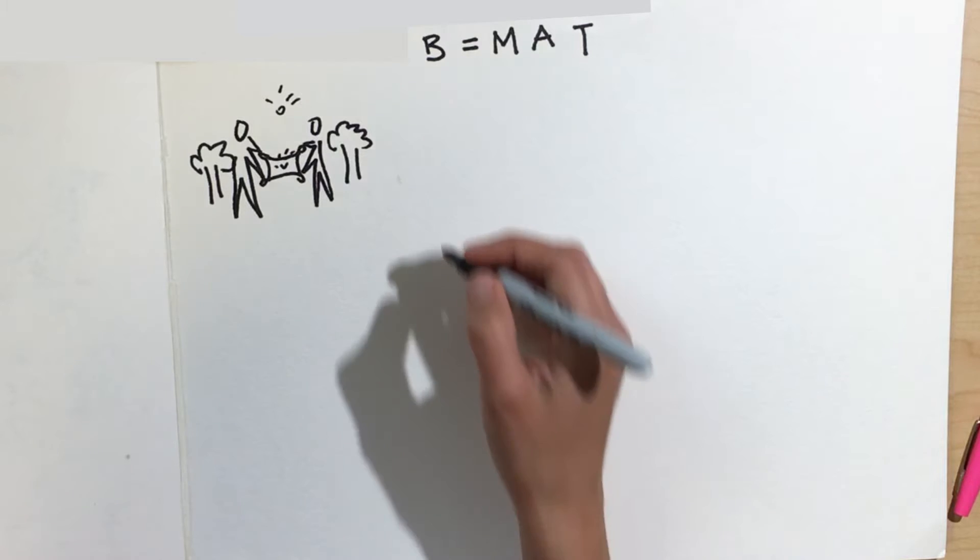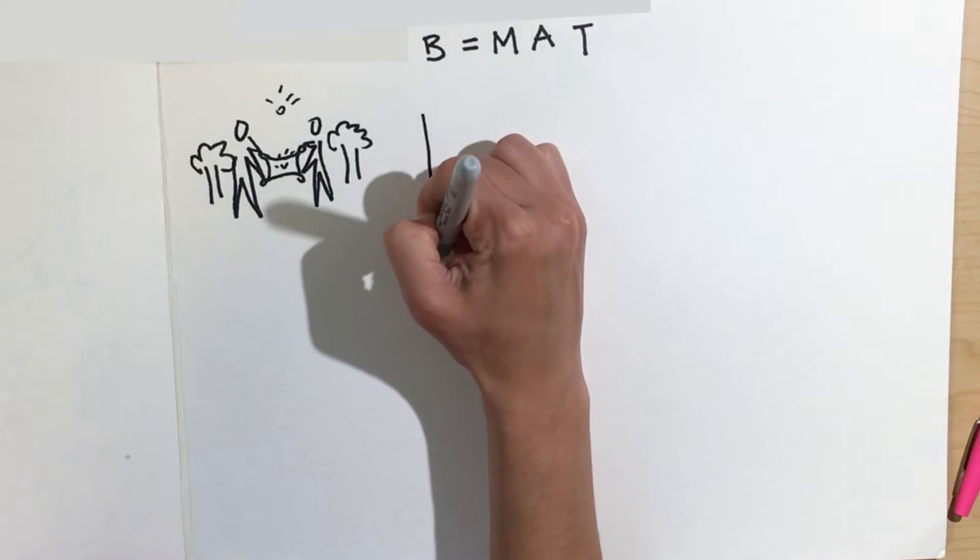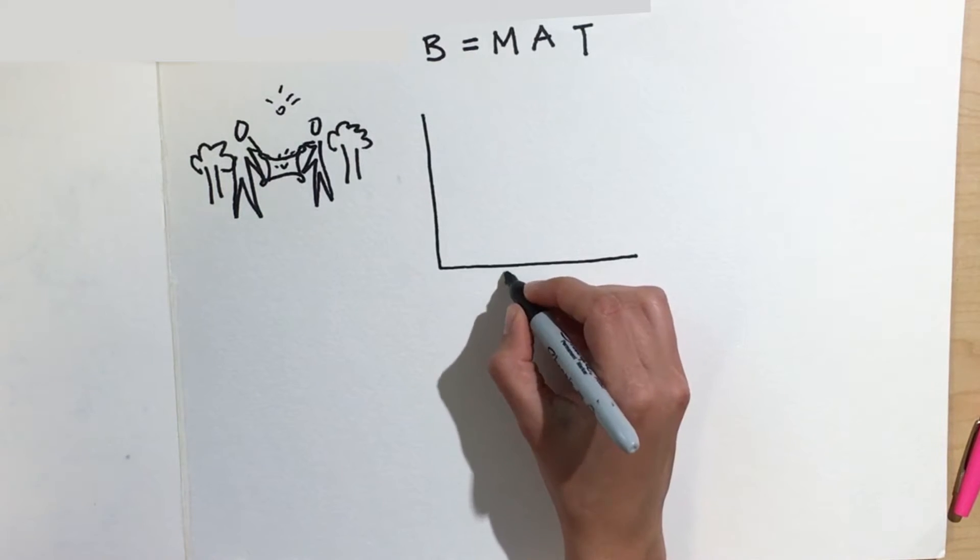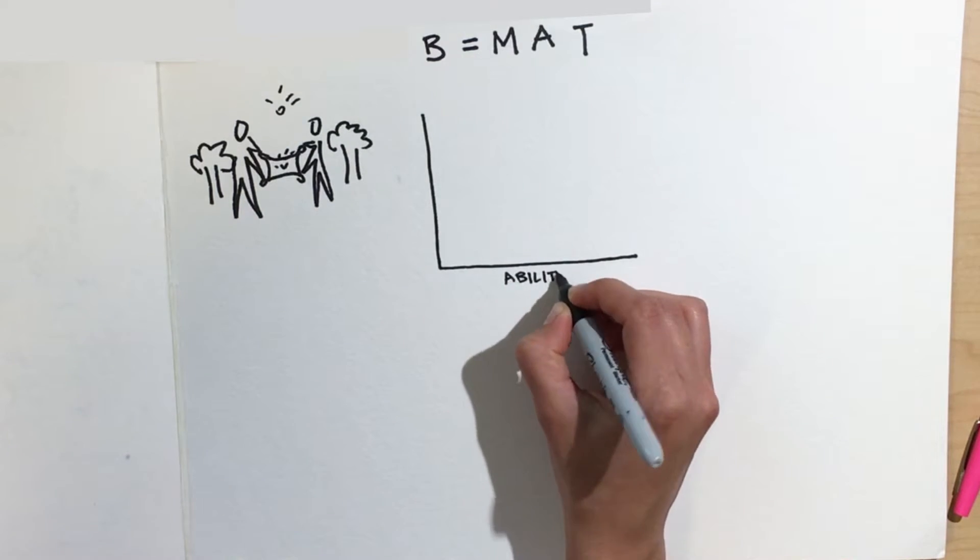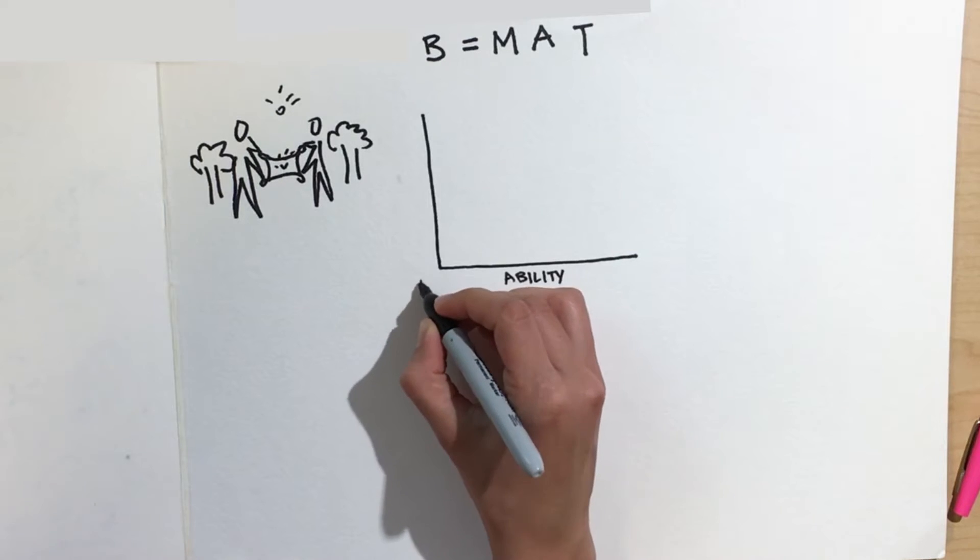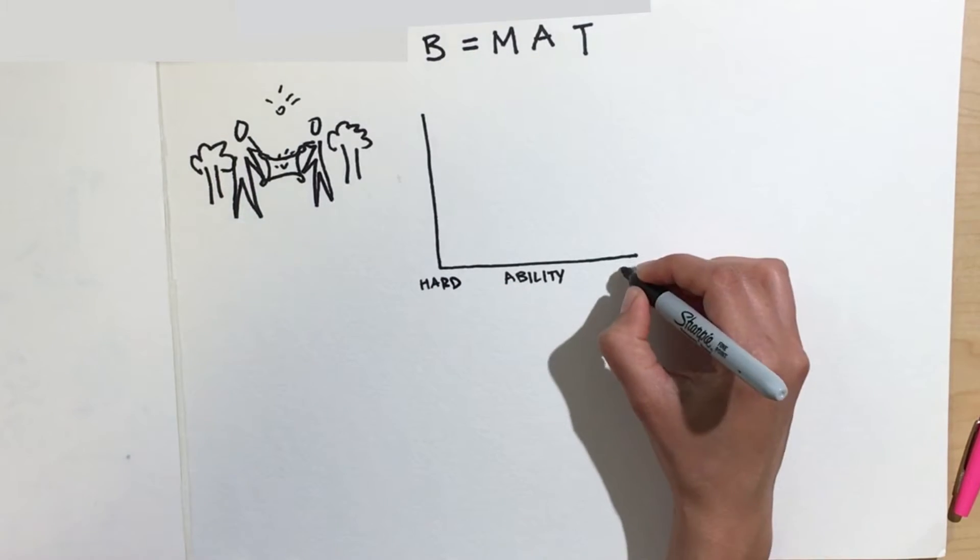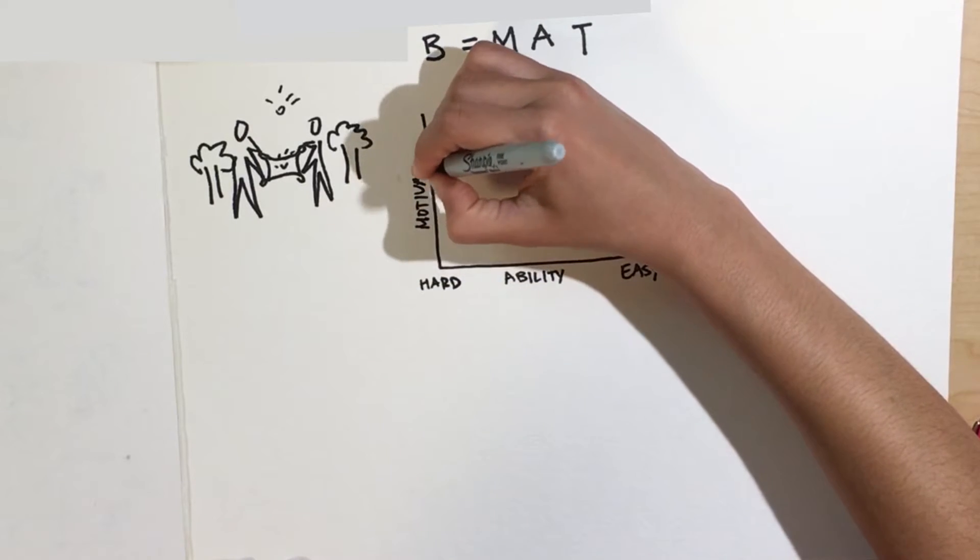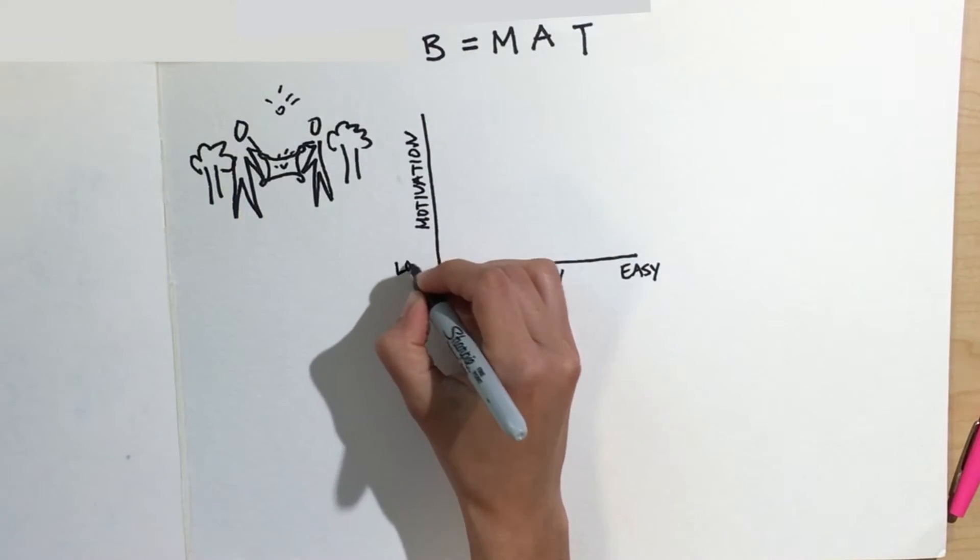To design for this behavior, I used the Fogg Behavior Model. In this model, we have a horizontal axis for ability, which ranges from low, or very hard to do, to high ability, or very easy to do. And a vertical axis for motivation, which also ranges from low to high.